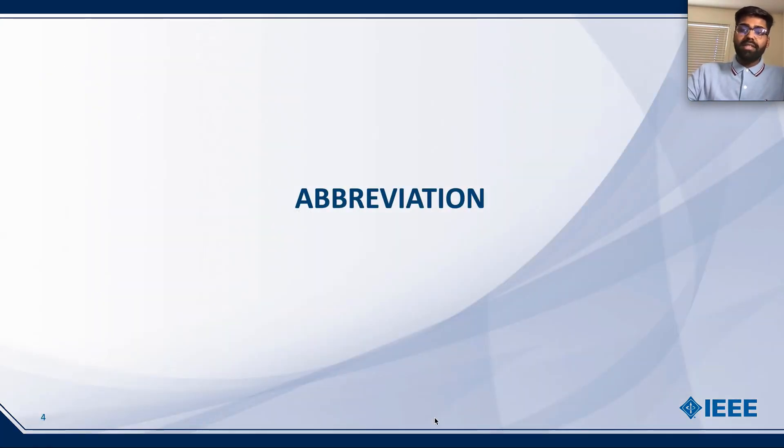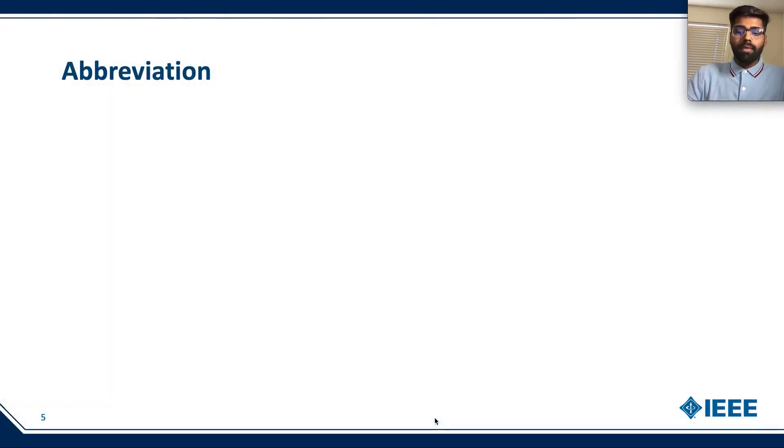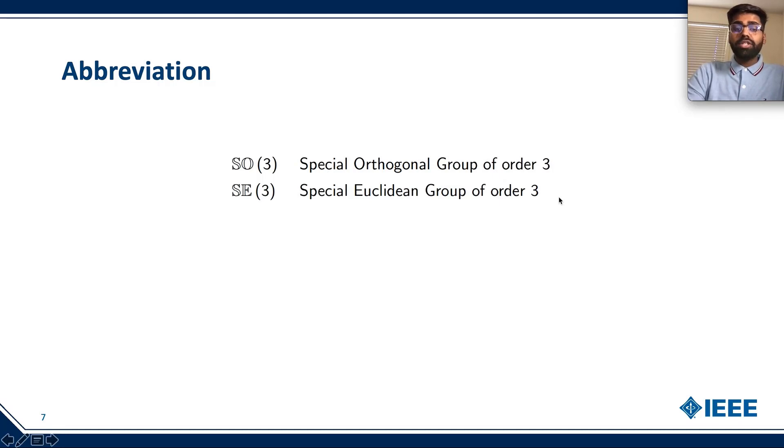The following set of abbreviations were used throughout the presentation. SO3 is the special orthogonal group of order 3. SE3 is the special Euclidean group of order 3. SE23 is the extended special Euclidean group of order SE3.